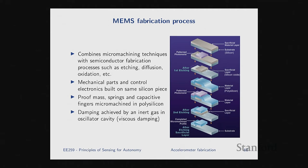One thing we haven't talked about is the damping mechanism. The damping mechanism is actually interesting — it's achieved by putting your spring-mass system in a chamber inside the chip, enclosing it, and having some inert gas in there. The viscosity of the gas generates the damping that you want. By controlling the pressure and what specific inert gas is put in the chamber, they achieve the required damping. It needs to be airtight, so other gas or liquid molecules cannot get in or out, because if anything changes, the viscosity changes, which changes the damping factor.